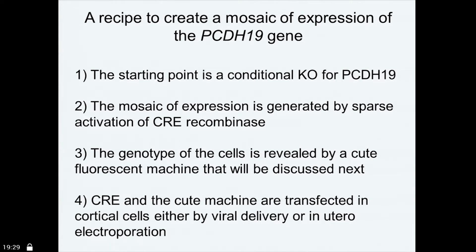So how do we build our model? First of all, we need to start from a conditional knockout mutant mouse for PCDH-19, and that is the mouse that Maria and Silvia have been developing in Milan, and I'm happy to report they are happily reproducing right now. We are going to create the mosaicism by having what we call sparse activation of CRE recombinase. The genotype of the cell is going to be revealed by the fluorescent reporter. We will deliver CRE recombinase and the fluorescent reporter into the brain either by viral transduction or by in utero electroporation.